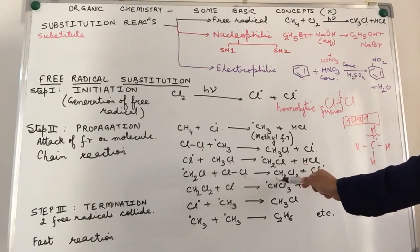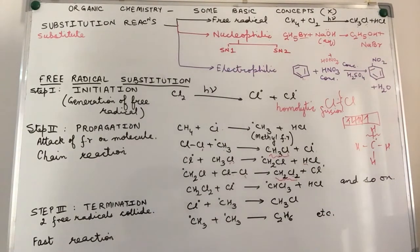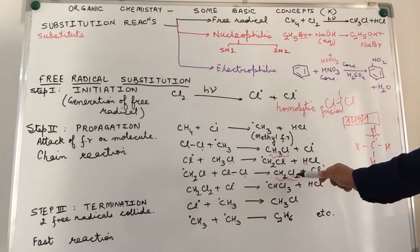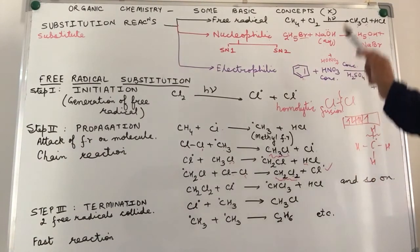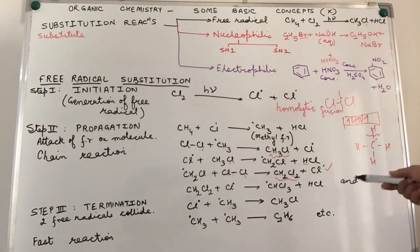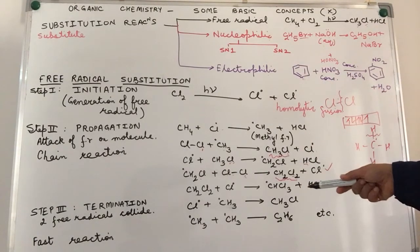So, we have our second product of this particular reaction. Our first one was chloromethane, second is CH2Cl2. But, interestingly again, we have a chloride free radical, which is again active, goes around, wants to find a partner.